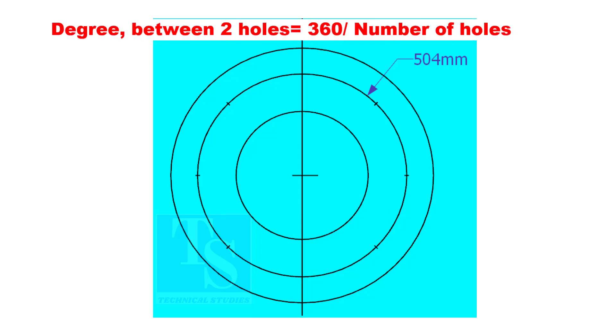If you divide 360 by the number of holes, you will get the angle between two holes.